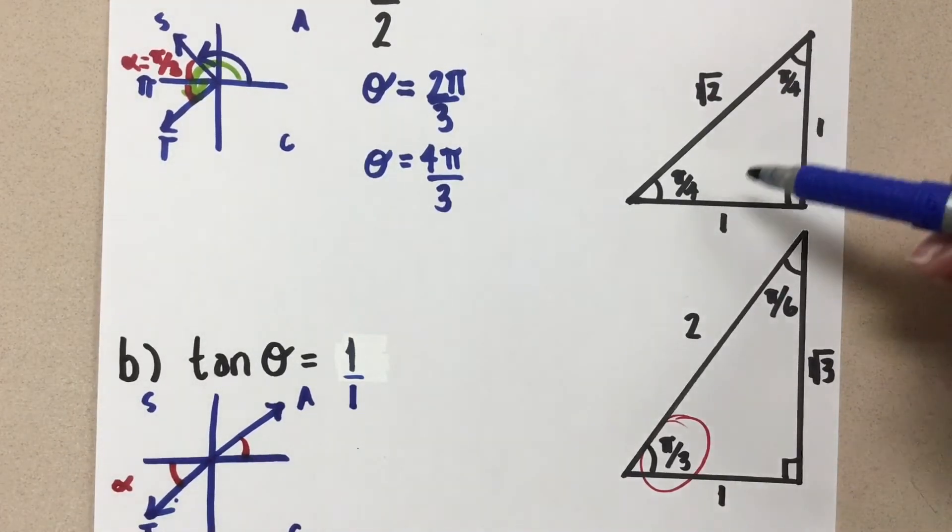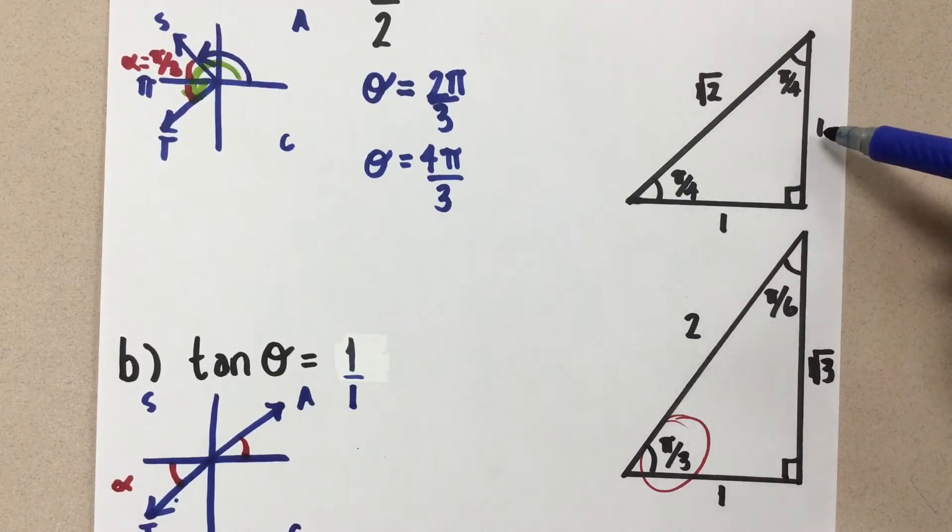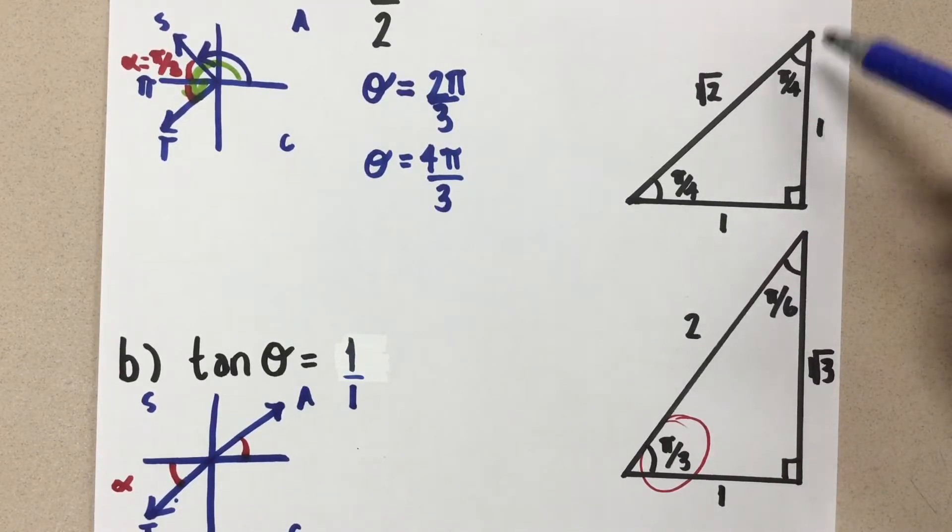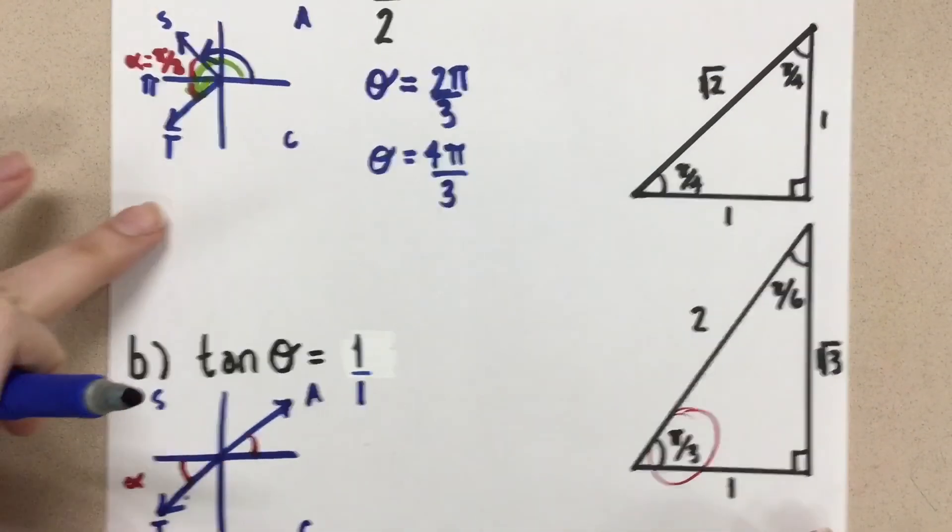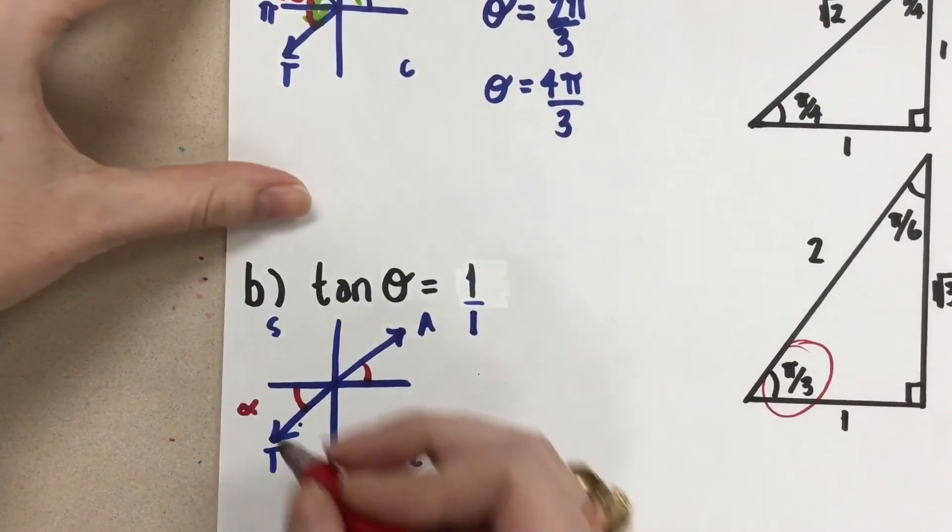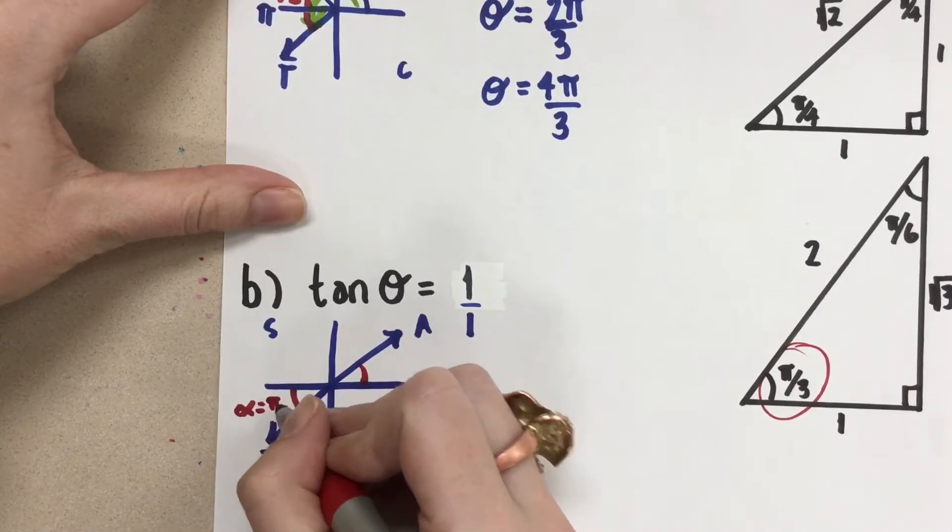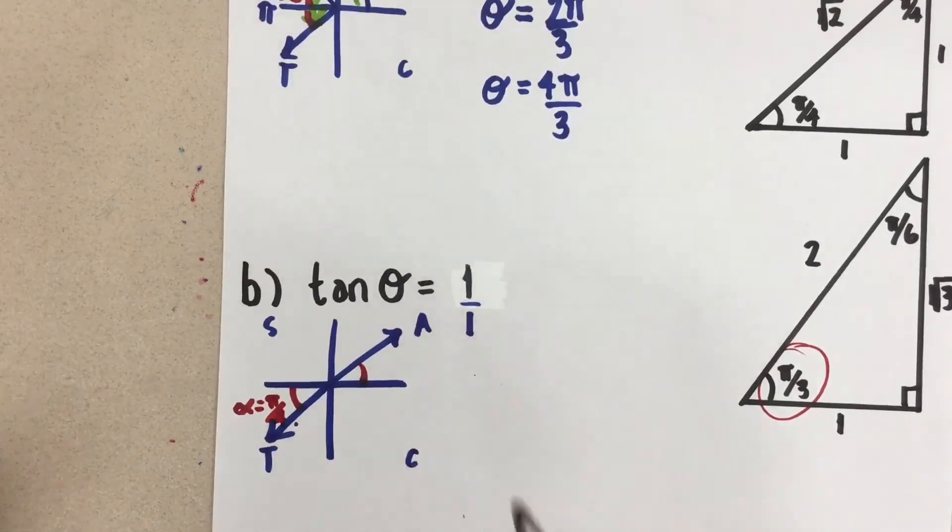Opposite over adjacent is one over one. And so π over four does work for the related acute angle here. So I'm going to come back, our related acute angle is π over four, like this.